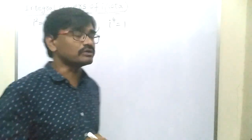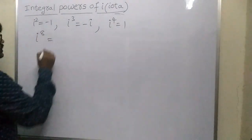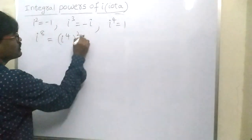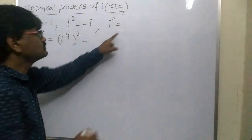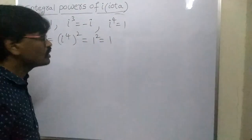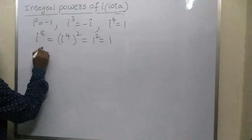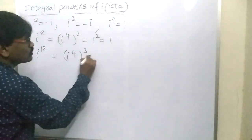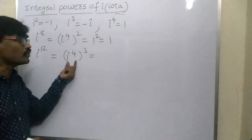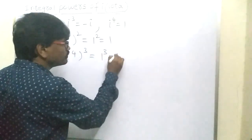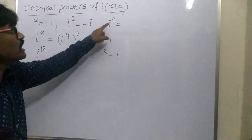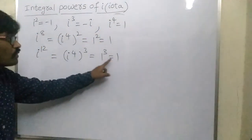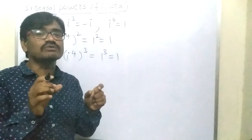Let us see. First of all, i⁸: write down i⁸ as (i⁴)². Write down i⁴ value as 1, you will get 1², which is equal to 1. Next, find out i¹². Write down i¹² as (i⁴)³. Again, write down i⁴ as 1, you will get 1³, which is equal to 1. On observing: i⁴ = 1, i⁸ = 1, i¹² = 1.